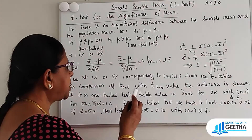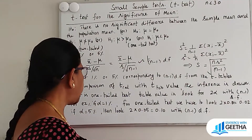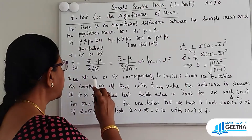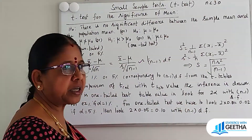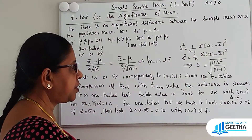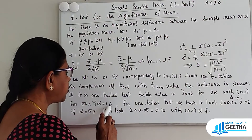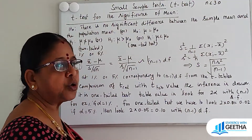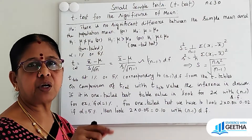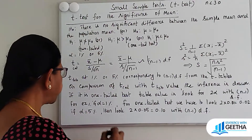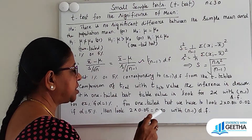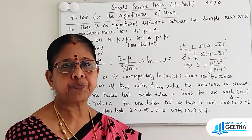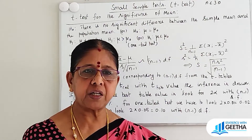The calculated value is compared with the table value to draw the inference. The T table value for N minus 1 degrees of freedom is used for both one-tailed and two-tailed tests.